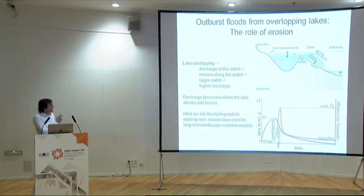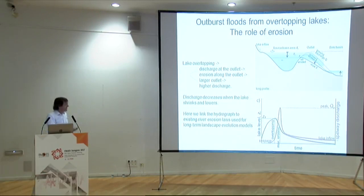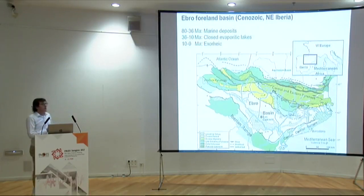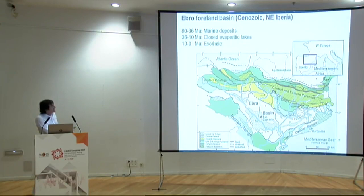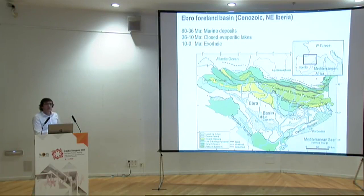The idea is to link the hydrograph produced here with existing river erosion laws that have been tested in long-term landscape evolution models, in order to improve the understanding. Let me show you an example of a long-term landscape evolution model — not just because it's my own work, but also because it turns out we are sitting right here. This is the Pyrenees, this is the Ebro basin surrounded by the Iberian range and the Catalan coastal ranges.